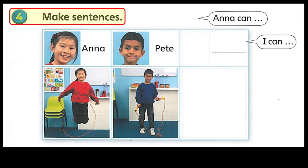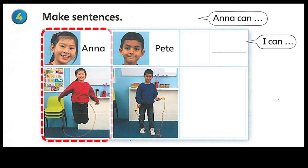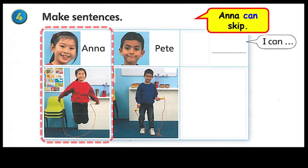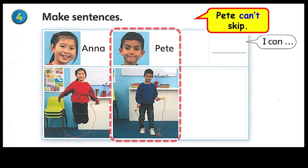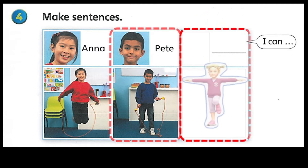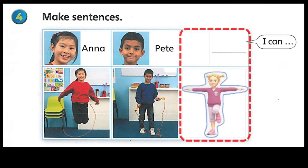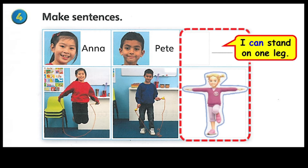4. Make sentences. Anna can skip. Pete can't skip. I can stand on one leg.